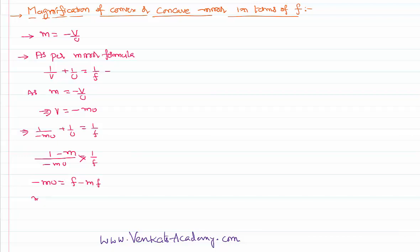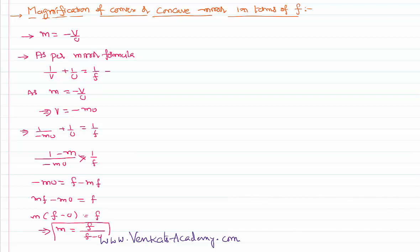Getting the m term to one side and cross multiplying: minus mu equals f minus mf. Rearranging, mf minus mu equals f. Taking m common: m times (f minus u) equals f.